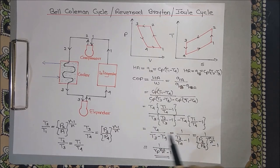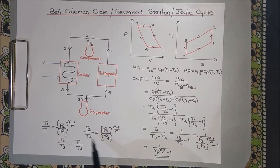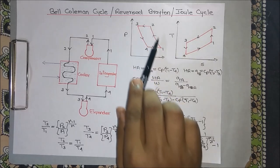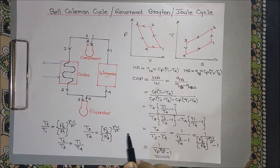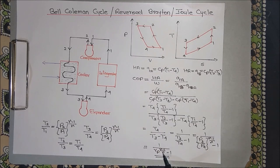Since T2/T3 = T1/T4, the (T1/T4 − 1) terms cancel, and we get COP = T4 / (T3 − T4). Dividing numerator and denominator by T4 gives COP = 1 / (T3/T4 − 1). Since T3/T4 = (p3/p4)^((γ−1)/γ), and p3/p4 = p2/p1 is defined as the pressure ratio rp, the final equation for the COP of the Bell-Coleman cycle is: COP = 1 / [rp^((γ−1)/γ) − 1].